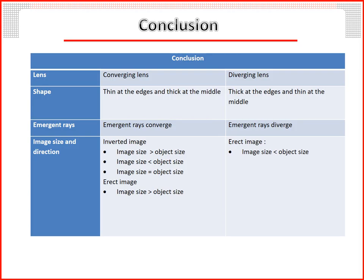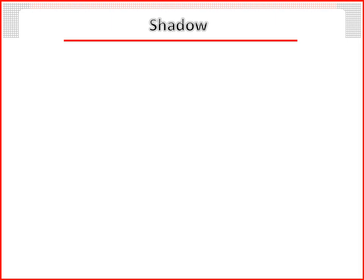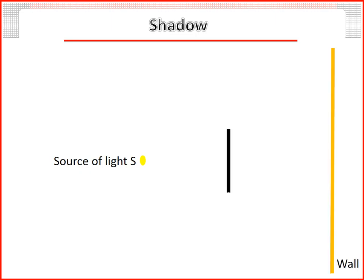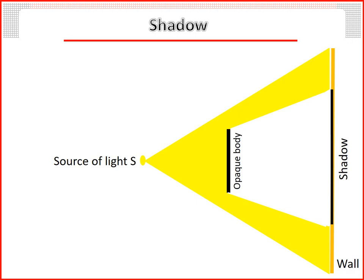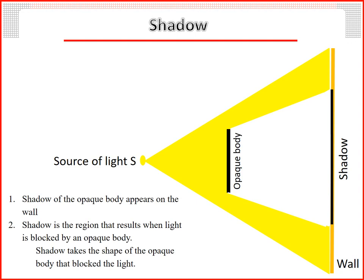Shadow: what happens when light is directed toward an object? Consider a source of light S, a wall, and an object body between the wall and the source of light. When light is directed toward the object body, a shadow appears on the wall. Shadow is the region that results when light is blocked by an object body, and the shadow takes the shape of the body that blocked the light.